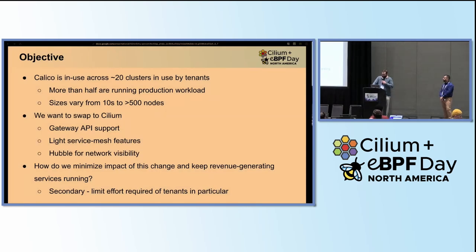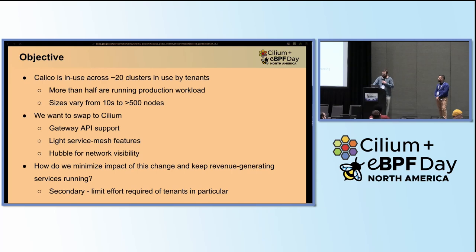Our platform is live and it's used by applications that generate the significant majority of our revenue in Samsung Ads. Obviously, that means it was important for us to have a path providing minimal downtime. We had about 20 clusters at the time of this migration. Our clusters are managed by Rancher, and they're a mix of AWS and bare metal environments. More than half of those 20 clusters are running production workload, and the sizes vary from relatively small with just tens of nodes, and the larger ones can be anywhere from 300 to over 500 nodes.